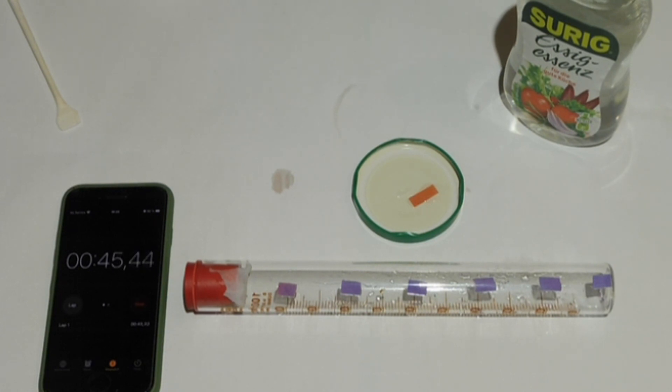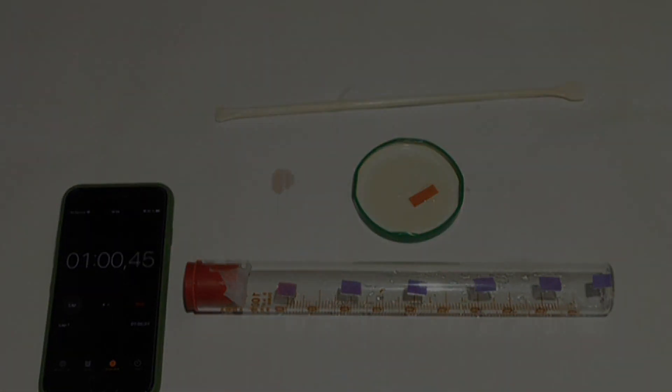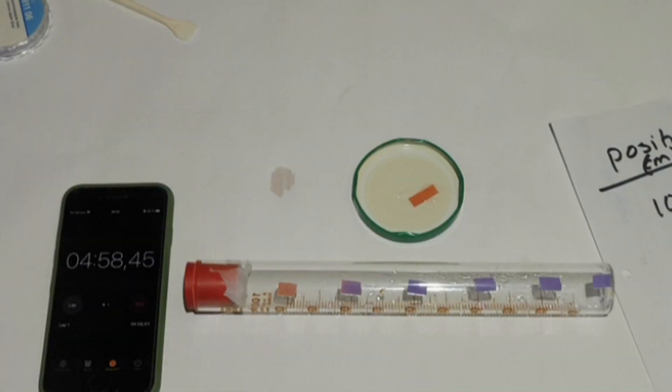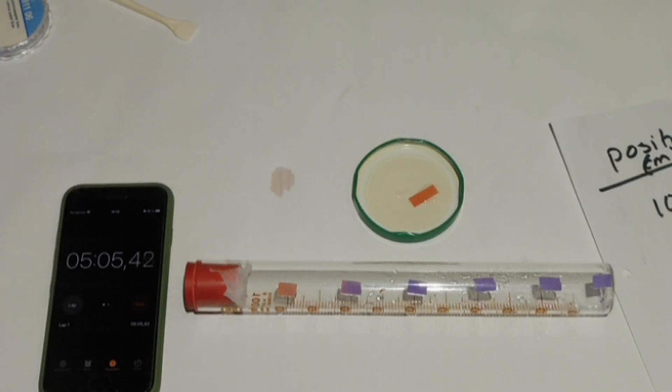I will now leave the experiment to run until all litmus papers have changed color. I will record the time when each litmus paper completely changes to red. After five minutes, the first litmus paper's color is now completely red. The time is then recorded in a suitable data table.